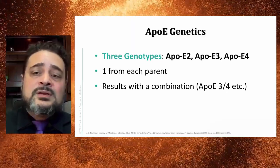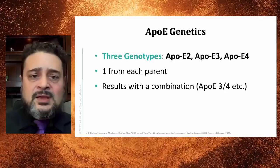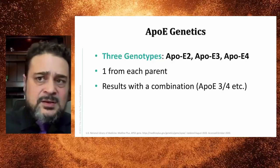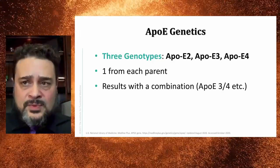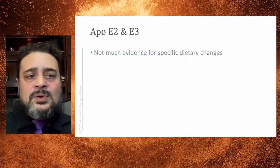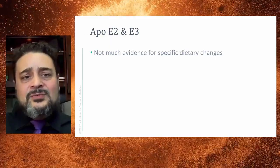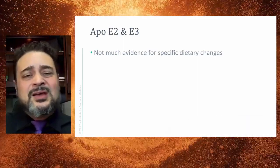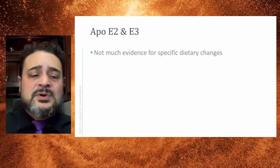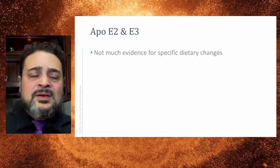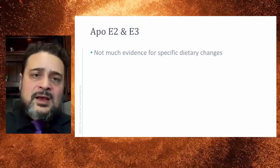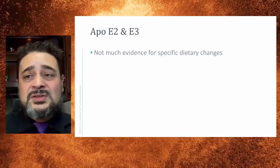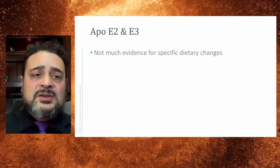There are three possible genotypes: APOE2, APOE3, and APOE4. You get one from each parent, so you'll end up with a combination—APOE3/4, APOE2/3, and so on. For APOE2 and APOE3, honestly there's a lot of information online in blogs, but there's not really good evidence on making specific dietary changes for these particular genotypes. We just don't have the data to confidently say how to modulate or customize the food plan based on these genotypes. The best I can tell you is follow the biomarkers, and every patient is individual.